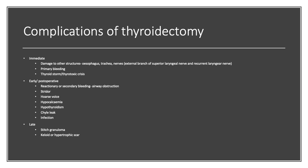Complications of thyroidectomy can be divided into immediate, early, or late. Immediate complications include damage to structures such as the esophagus, trachea, and nerves; primary bleeding; and thyroid storm. Early complications include reactionary or secondary bleeding causing airway obstruction, stridor, hoarseness of voice, hypocalcemia, hypothyroidism, chyle leak, and infections. Late complications include stitch granuloma and keloid or hypertrophic scars.